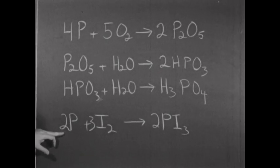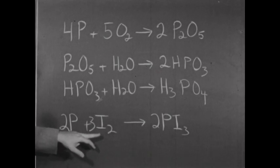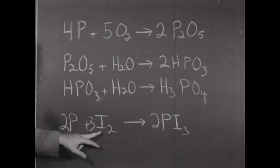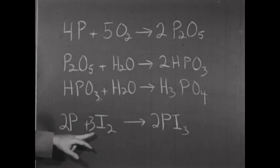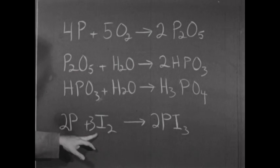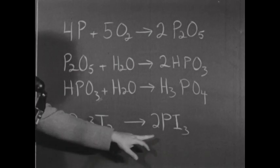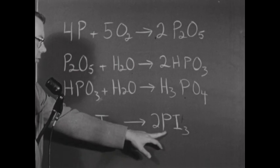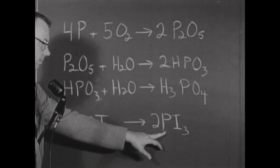When a small piece of phosphorus was treated with crystals of iodine, a rapid reaction took place with the production of phosphorus triiodide.